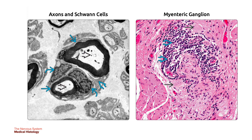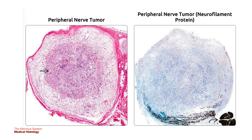On the left, axons in the bold black arrow are surrounded by myelin sheets in the single blue arrow produced by your Schwann cells. Schwann cell nuclei in the curved blue arrow and cytoplasm in the bold blue arrow with abundant endoplasmic reticulum are also seen. On the right, this section from the colon wall shows the Auerbach's or myenteric plexus — a collection of ganglion cells in the single black arrow in the enteric nervous system. Increased numbers of lymphocytes in the bold blue arrow are abnormal. Also shown is a schwannoma displacing normal nerve fibers to the periphery, confirmed by neurofilament protein staining.